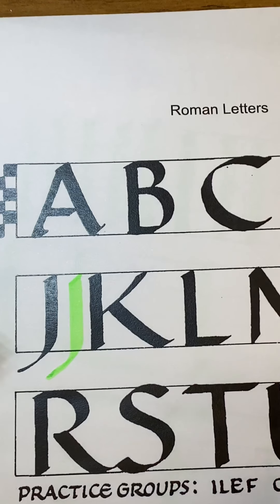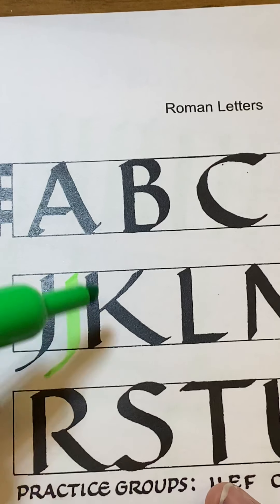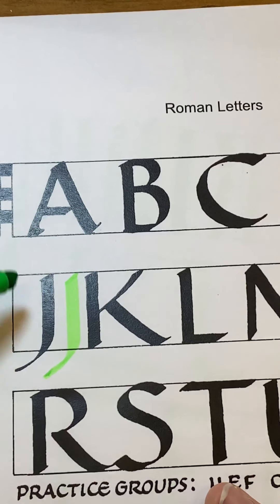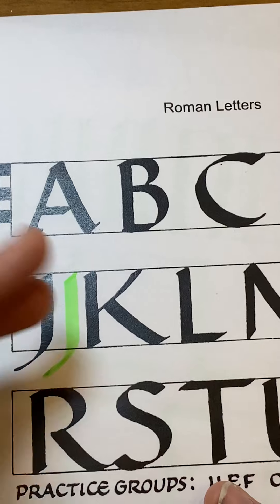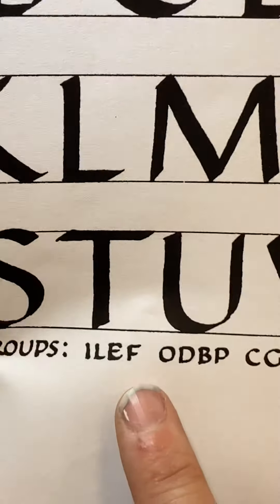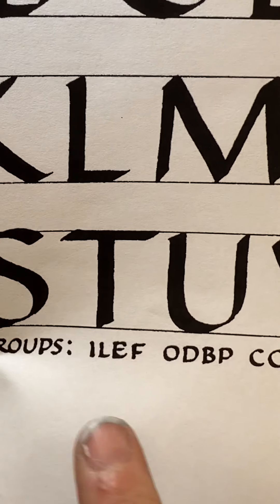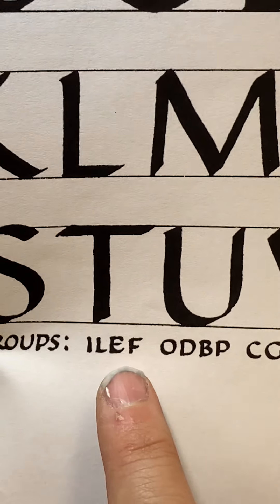If you smush them too close, like you put a J right here, that's going to confuse your letters. That's going to make everything really dense. For practice purposes, give yourself space like a rectangle block. Okay, so today you're doing the first group: I, L, E, F. Great.